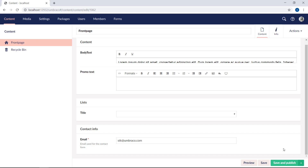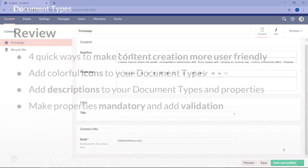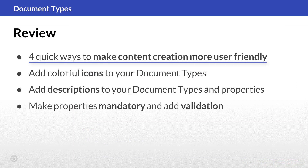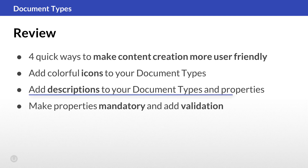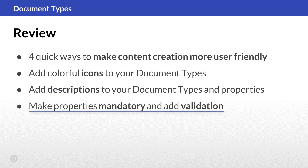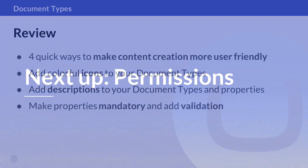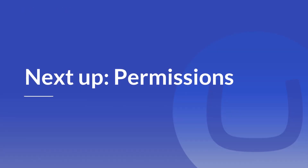I've covered everything I wanted to in this video. Let's do a quick review. There are four quick ways to make content creation more user-friendly for content editors: add colorful icons to your document types; add descriptions on document types and properties to make it easy for content editors to identify when to use what; make properties mandatory; and add validation to further help your content editors create amazing content. In the next video, we will dive into the various permissions you can set on your document types.